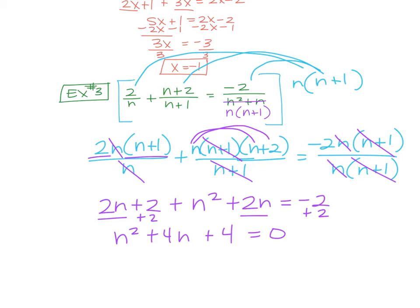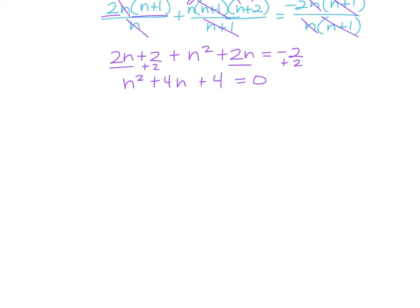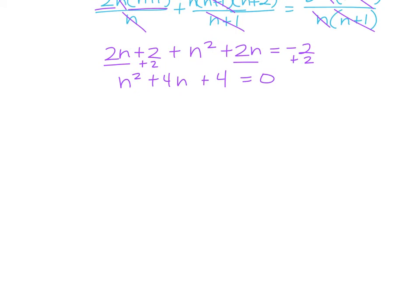Did you follow me on that? So if that's your setup, how does that factor? What can you multiply to get 4 that you can add to get 4? 2. So you're doing n plus 2 times n plus 2 equals 0. So what's your answer? Just negative 2, right? It's negative 2 and negative 2. You don't need both of them. So n equals negative 2.